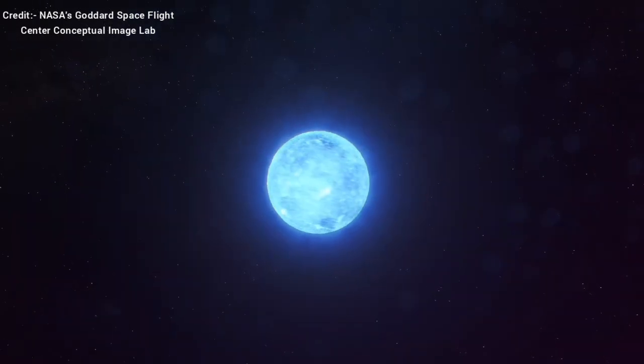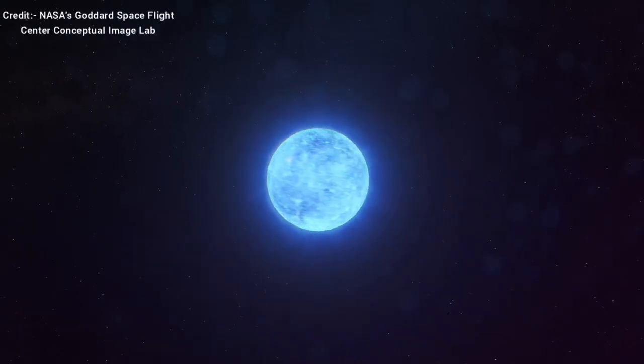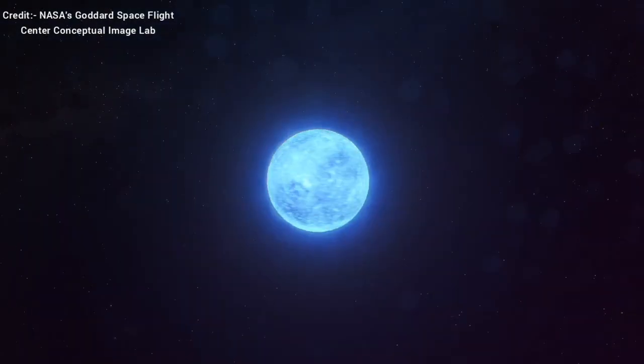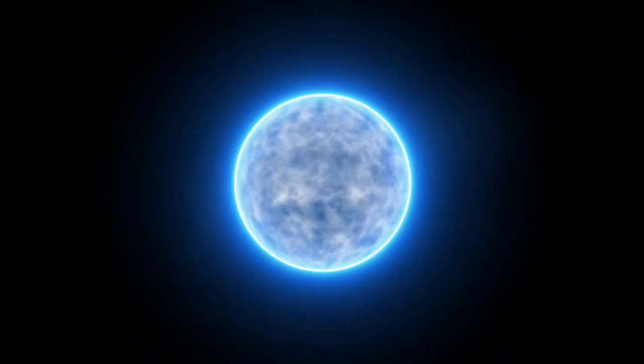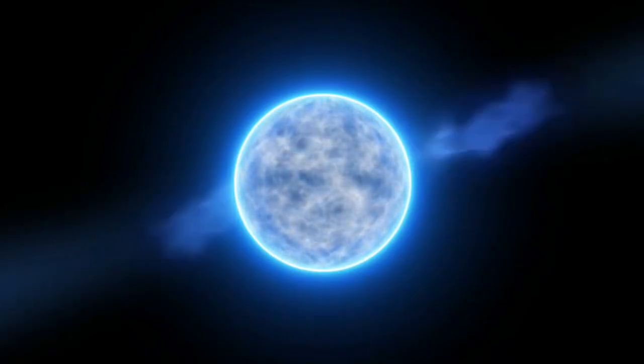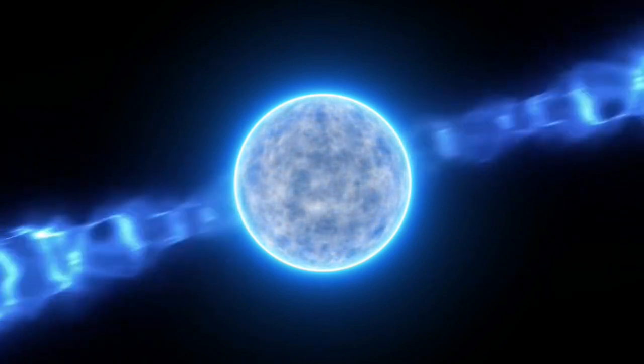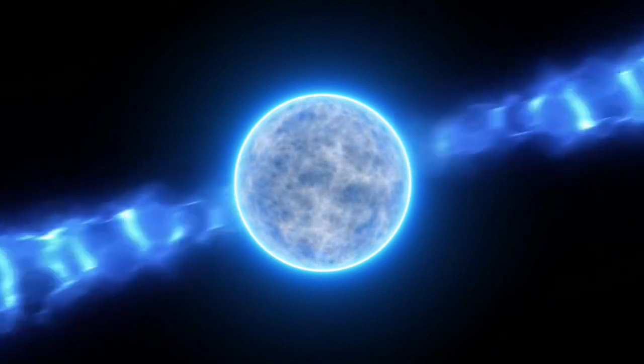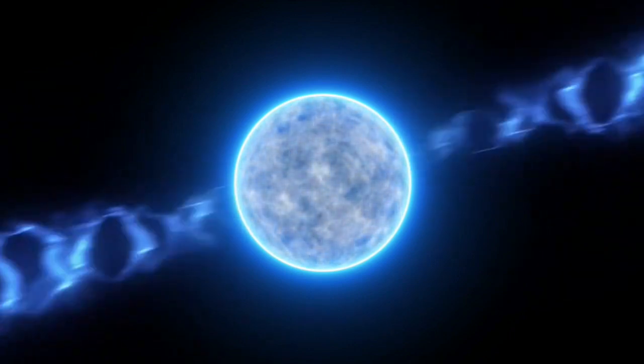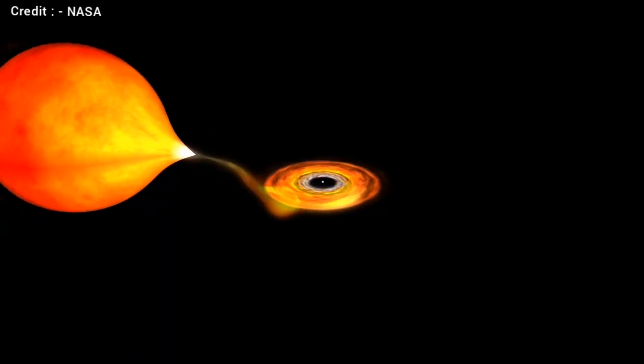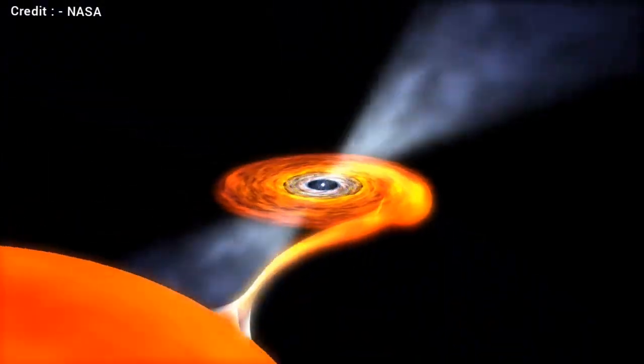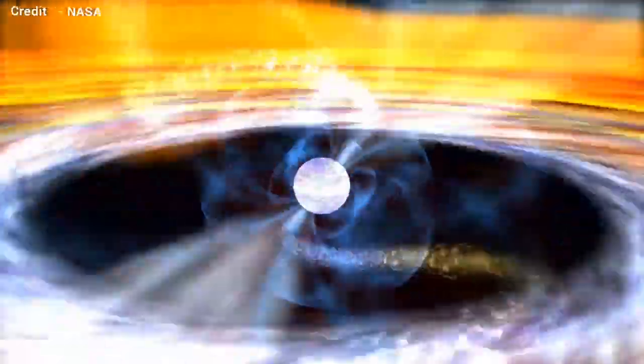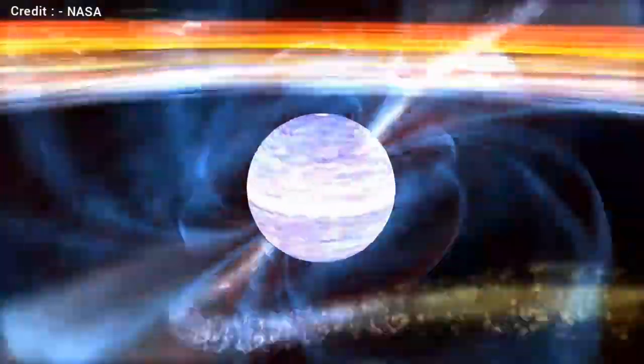And like stars, they can be found by themselves or in binary systems with a companion. Many neutron stars are likely undetectable because they simply do not emit enough radiation. However, under certain conditions, they can be easily observed. A handful of neutron stars have been found sitting at the centers of supernova remnants, quietly emitting X-rays. In binary systems, some neutron stars can be found accreting materials from their companions, emitting electromagnetic radiation powered by the gravitational energy of the accreting material.